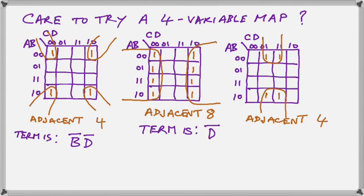Finally, we have an adjacent four, as shown here. And these four represent B-bar D. Because the four squares that are in the group have B as a zero and D as a one, even though all four squares differ in their A and C.